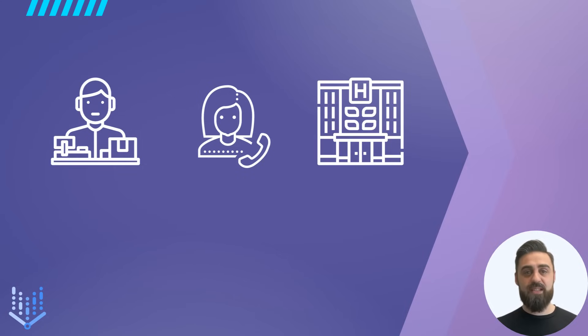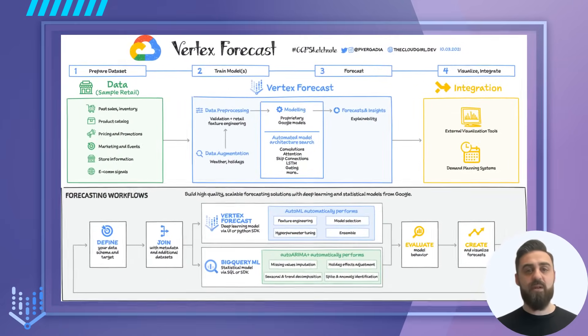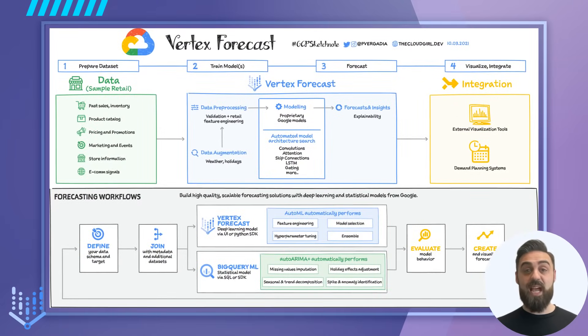A retailer needs to predict product demand or sales, a call center manager wants to predict call volume to hire more representatives, a hotel chain requires hotel occupancy predictions for the next season, and a hospital needs to forecast bed occupancy. Vertex Forecast provides accurate forecasts for these and many other business forecasting use cases. You can build forecasting models in Vertex Forecast using advanced AutoML algorithms for neural network architecture search. Vertex Forecast offers automated pre-processing of your time series data, so instead of fumbling with data types and transformations, you can just load your dataset into BigQuery or Vertex, and AutoML will automatically apply common transformations and even engineer features required for modeling.